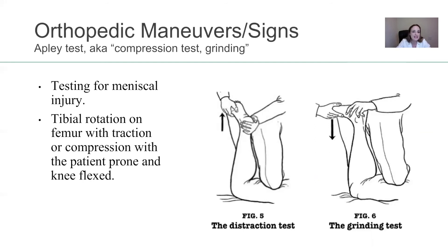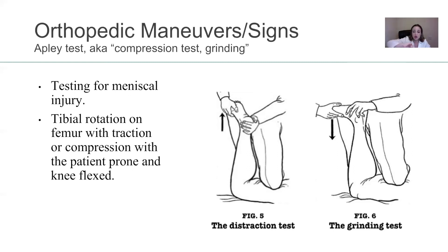The Apley's test, also known as the compression test or grinding test — what are we checking for here? We're also checking for meniscal injury. When I look at the word Apley, I like to think of 'apply,' because I'm going to apply pressure or compression to the knee to check the integrity of the meniscus. You have the patient facing down, you bend the knee, and you press the leg down and literally grind. Tibial rotation on the femur with traction or compression, with the patient prone and the knee flexed, is going to cause discomfort if there's something wrong with the meniscus.